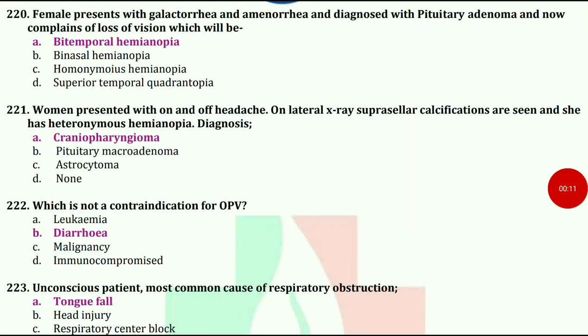Female presents with galactorrhea and amenorrhea, diagnosed with pituitary adenoma, now complaints of loss of vision — what will be the diagnosis? Bitemporal hemianopia.